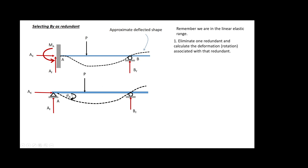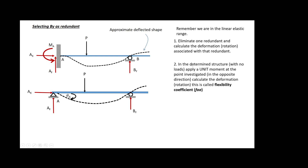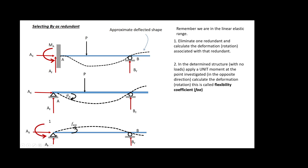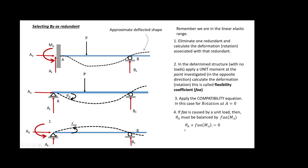We calculate the rotation at A in this reduced structure. Then, in the determinate structure without any external load, we apply a unit moment — because we are dealing with rotations — and calculate a flexibility coefficient due to that unit moment. The rotation at A should be zero because of the fixed support, so we apply the compatibility equation: the rotation at A from the external load plus the flexibility coefficient multiplied by the moment at A should equal zero.